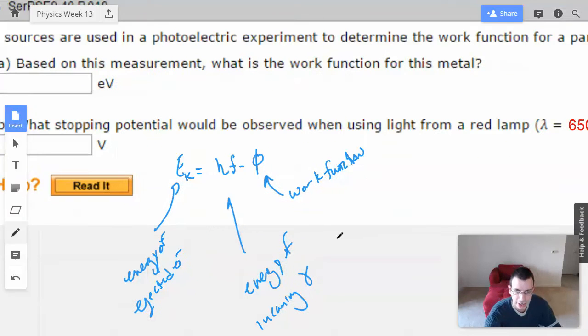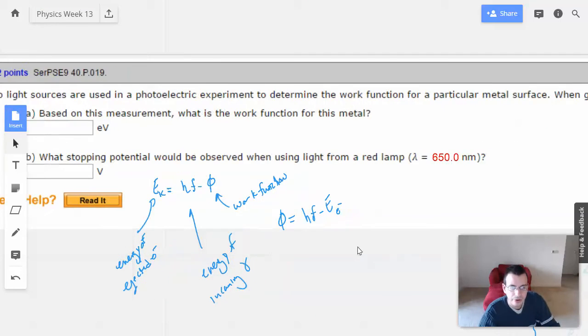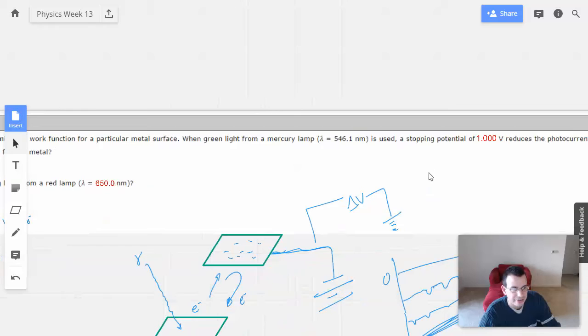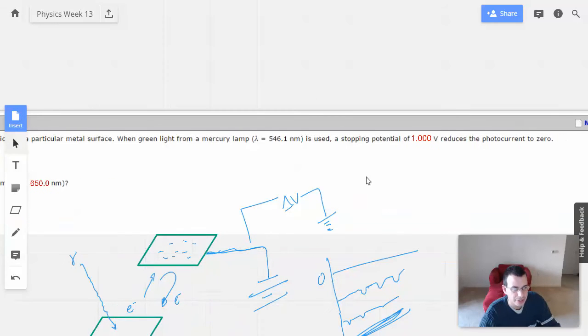So we're going to rearrange this guy. So phi, the work function, equals HF minus energy. I'm not going to say K, I'm going to say electron, but it is a kinetic energy of an electron. So what information do they give us? So a stopping potential.